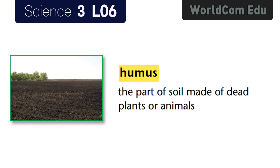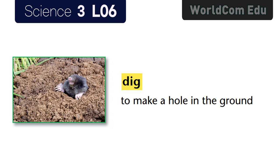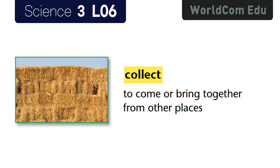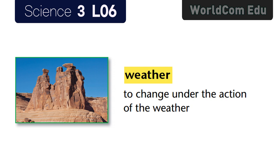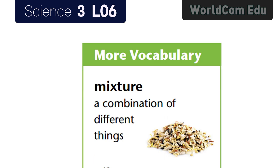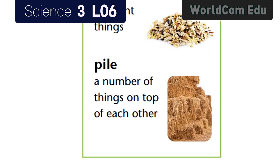Vocabulary review: Humus — the part of soil made of dead plants or animals. Grain — a very small piece of a hard thing. Dig — to make a hole in the ground. Collect — to come or bring together from other places. Decompose — for dead plants or animals to break down. Weather — to change under the action of the weather. Mixture — a combination of different things. Pile — a number of things on top of each other.